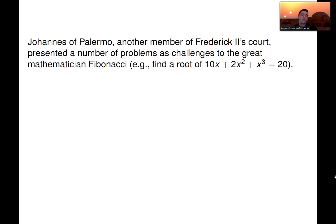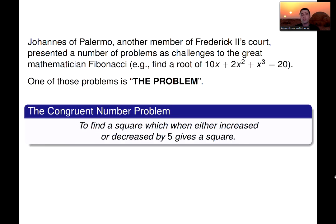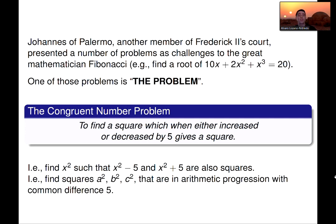Apparently, these problems came from other manuscripts, and there might be problems that were well-known at the time. For example, find the root of this cubic polynomial was a problem that was suggested to Fibonacci. But the one problem that I'm interested in is the congruent number problem. As it was proposed to Fibonacci, it was to find a square which, when either increased or decreased by 5, gives a square. Meaning they actually meant at the time a rational number, such that it's a square, and if you subtract 5 or add 5, you get other squares. So you get three squares that are in an arithmetic progression with difference 5, and that was the challenge to Fibonacci.